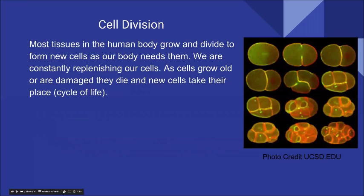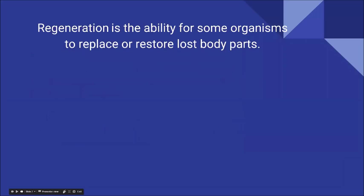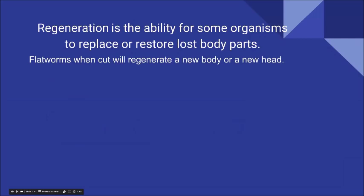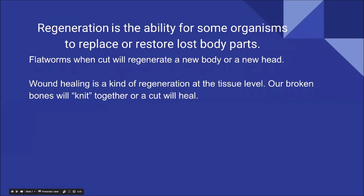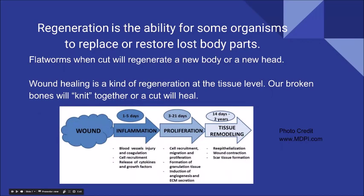Most tissues in the human body grow and divide to form new cells as our body needs them. We're constantly replenishing our cells. As cells grow old or damaged, they die and new cells take their place. The body has many safety features to ensure this happens in an orderly fashion. Regeneration is the ability for some organisms to replace or restore lost body parts — for example, flatworms will regenerate a new body or head depending on where they're cut. Wound healing is really regeneration at the tissue level.